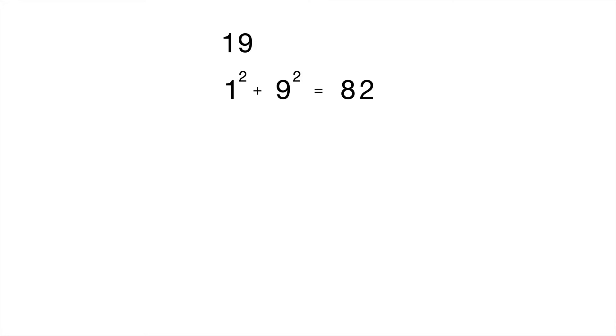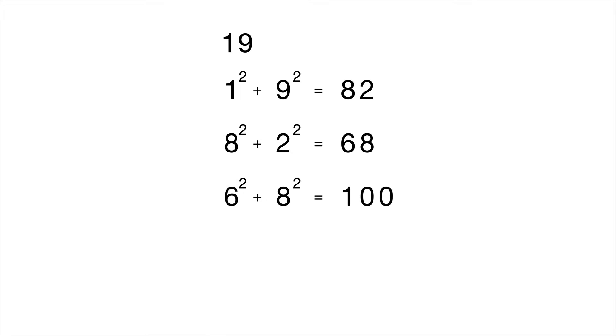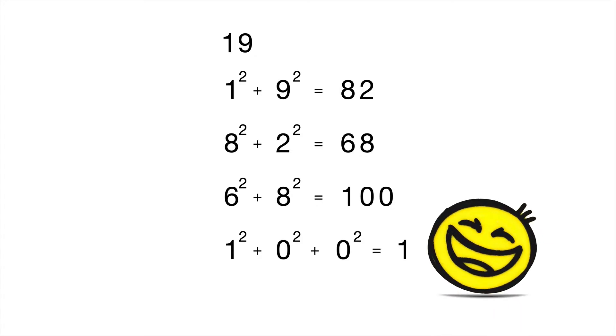Let's look at a couple of examples. If we're given the number 19, we break it down into its digits — 1 and 9 — and square each of them. So 1 squared plus 9 squared gives us 82. Then we break 82 down, and 6 squared plus 8 squared, or 36 plus 64, gives us 100. Then 1 squared plus 0 squared plus 0 squared equals 1. Since we arrived at 1, the number 19 is a happy number, so our function returns true.